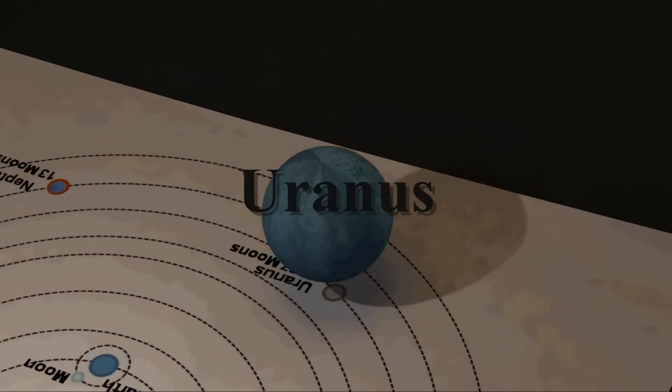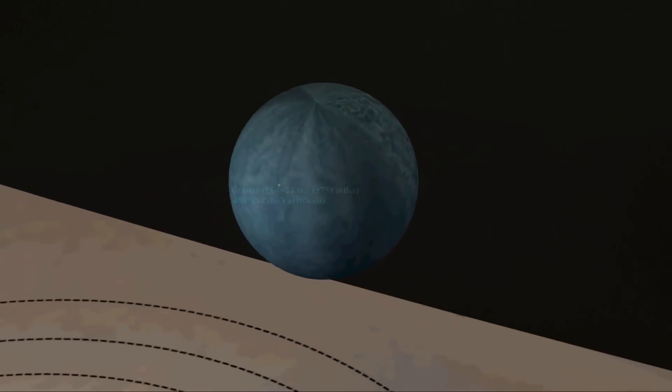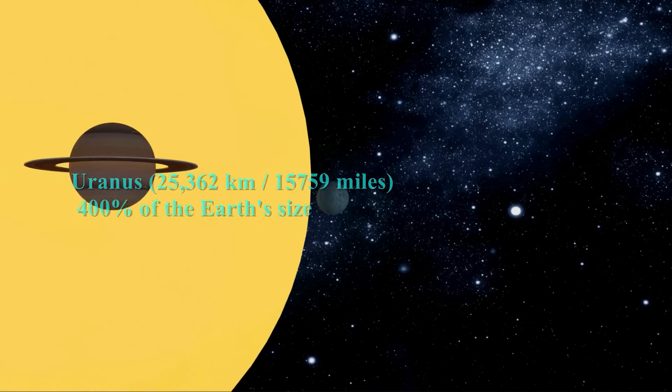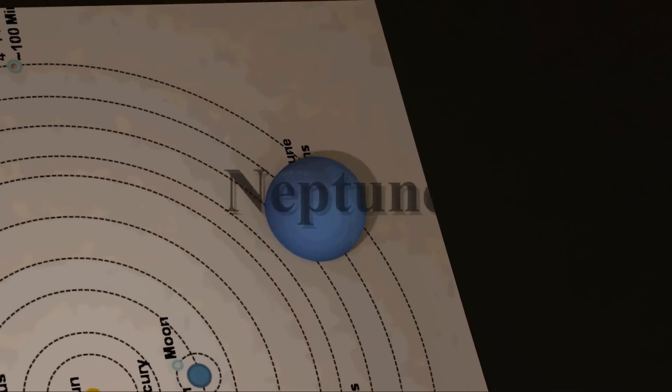Uranus. 25,362 km, 400% of the Earth's size. Neptune.